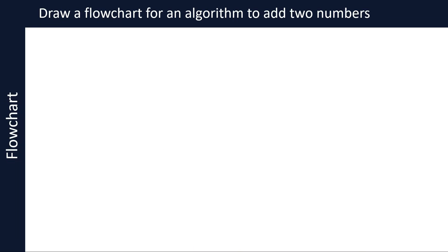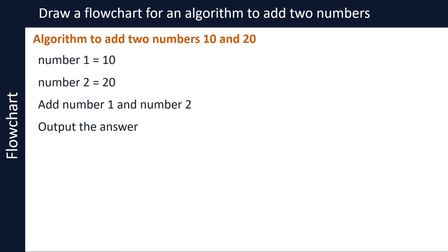Let's take an example of the algorithm to add two numbers. Here is the descriptive text: Set number 1 to 10. Set number 2 to 20. Add number 1 and number 2. Output the answer. Let's now draw the flowchart for this algorithm. The first symbol denotes the start of the flowchart, and the arrow coming out from the symbol shows the direction of flow in the algorithm.